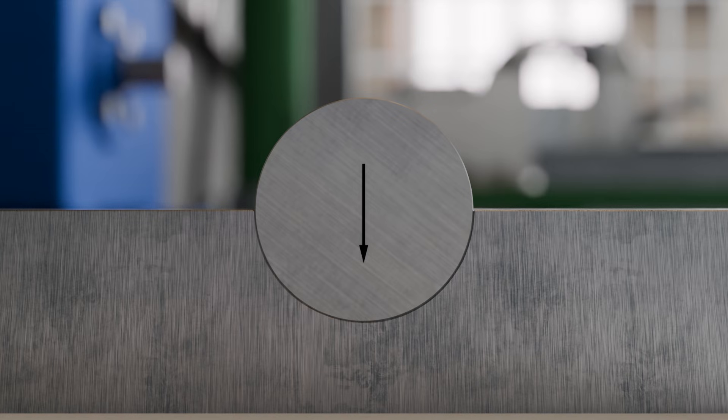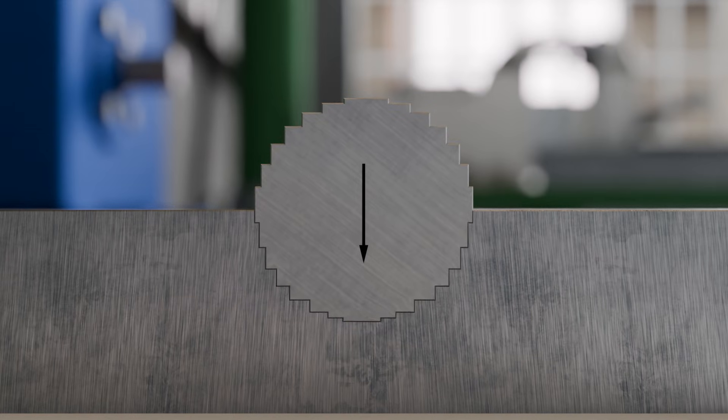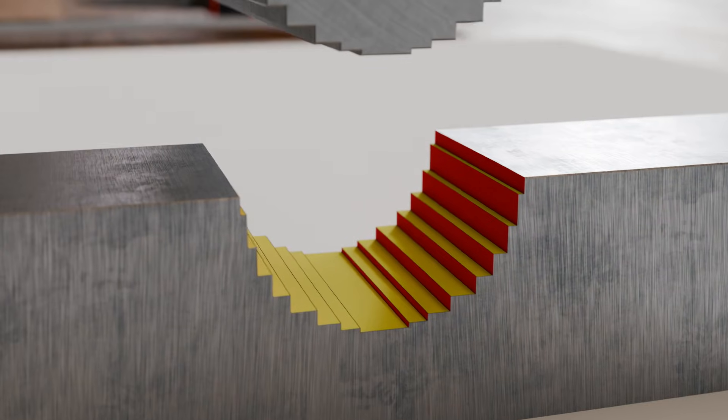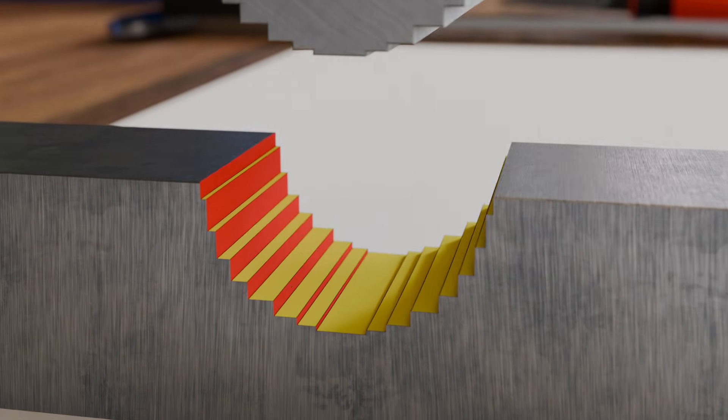This becomes clear if we imagine the curved surface to consist of infinitely many small steps. It immediately becomes evident that the applied force acts only on the horizontal portions of these steps, which are marked in yellow in the illustration.